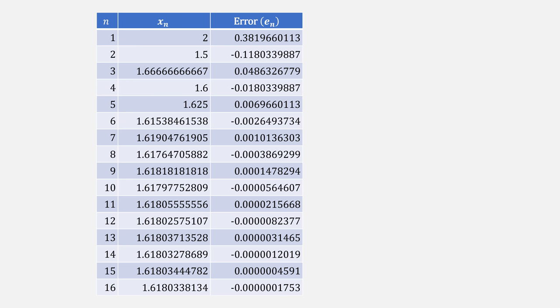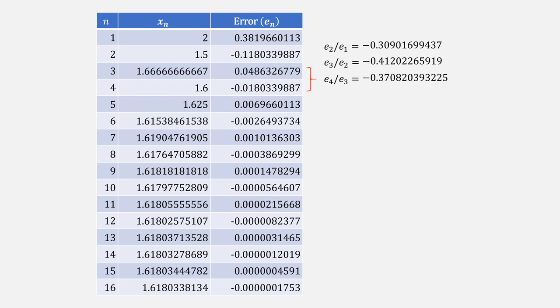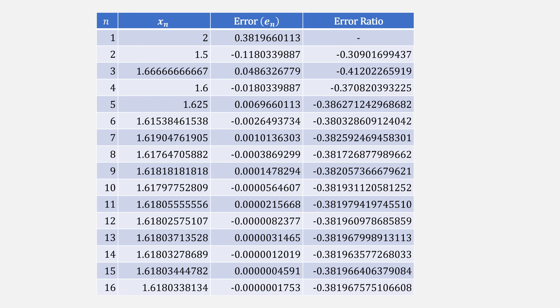Our sequence of errors will eventually approach zero. Now let's evaluate the error ratio at each step. Eventually these error ratios become approximately the same number. This is the basis of Aitken's delta squared method.